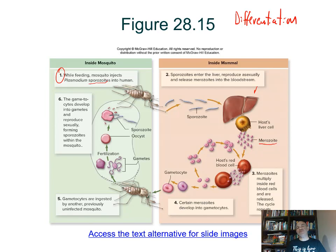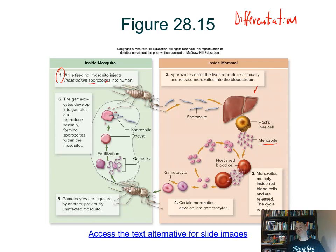Then they go through division and differentiation to form another stage called the merozoite. Merozoites enter red blood cells, reproduce within them, and then break out. When they break out, they release toxins that create periodic fevers and other symptoms of malaria. They then enter new uninfected blood cells and continue that cycle of asexual reproduction.